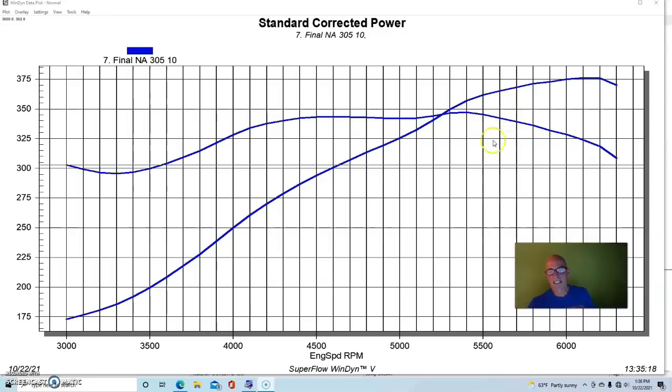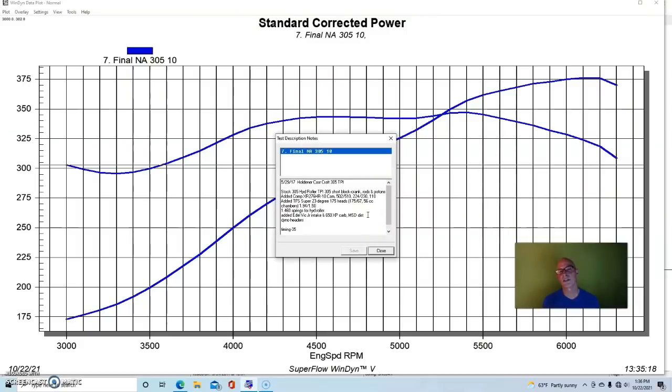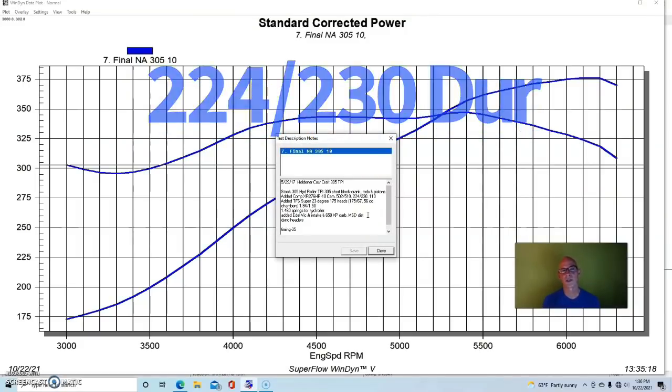We ran this thing stock, but this was in modified trim. This was a stock bottom end, just the tuned port hydraulic roller motor. This was a factory hydraulic roller motor to which we added a camshaft. Obviously you want to upgrade the camshaft. This was a Comp XR276 HR cam: 502/510 lift split, 224/230 degree duration split, and 110 degree lobe separation angle.